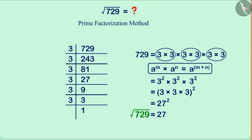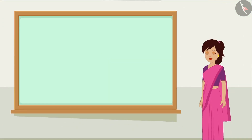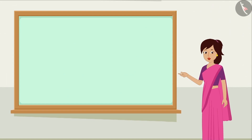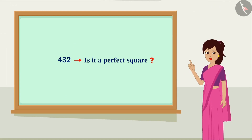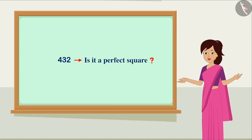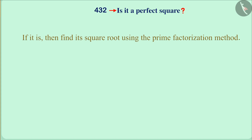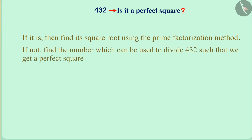Thus, here we get the square root of the number 729. Is 432 a perfect square? If you think it is a perfect square, then find its square root using the prime factorization method, and if not, find the number which can be used to divide 432 such that we get a perfect square.